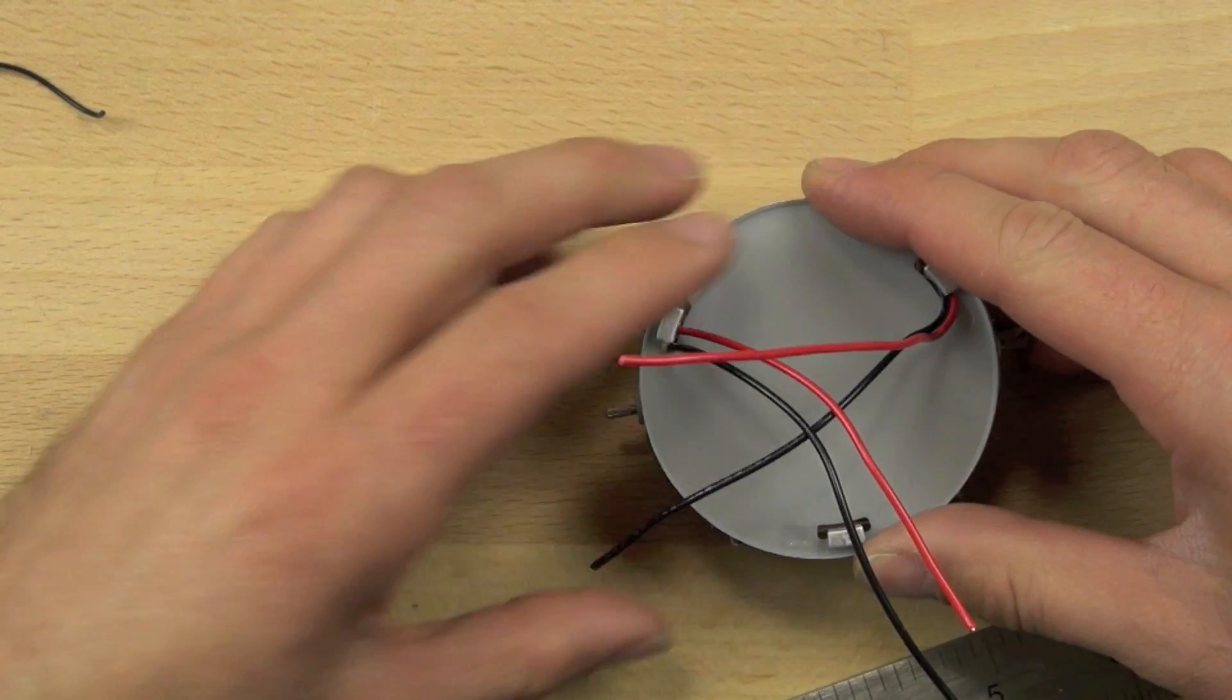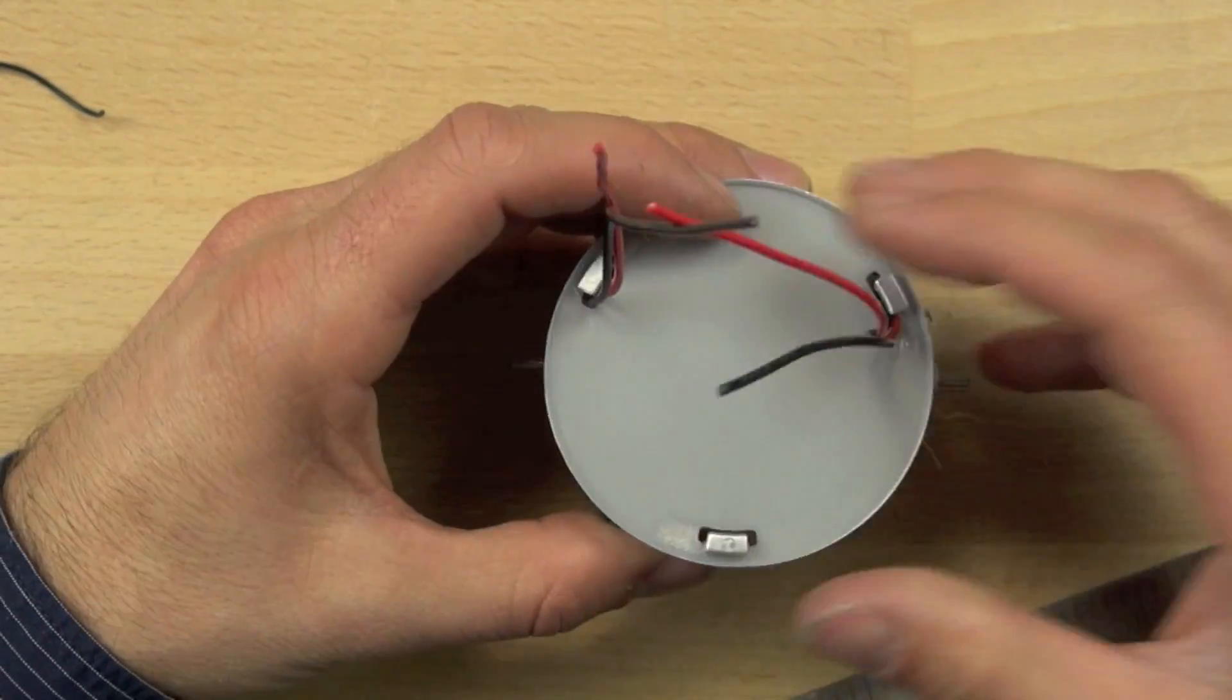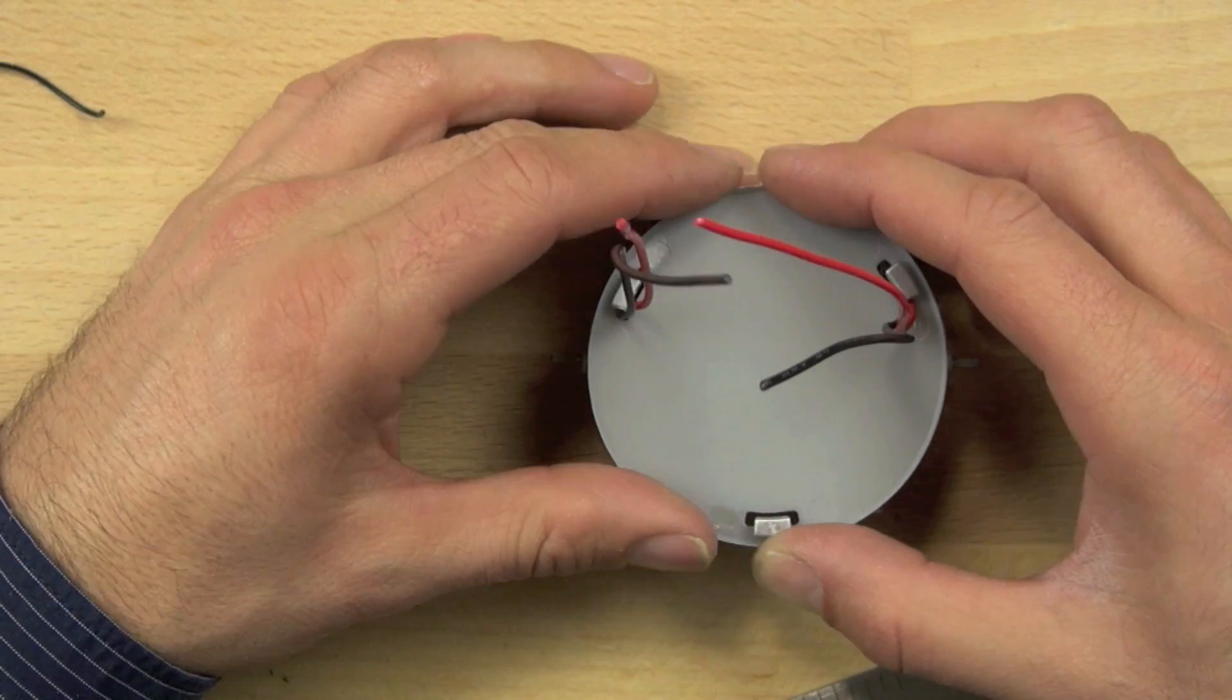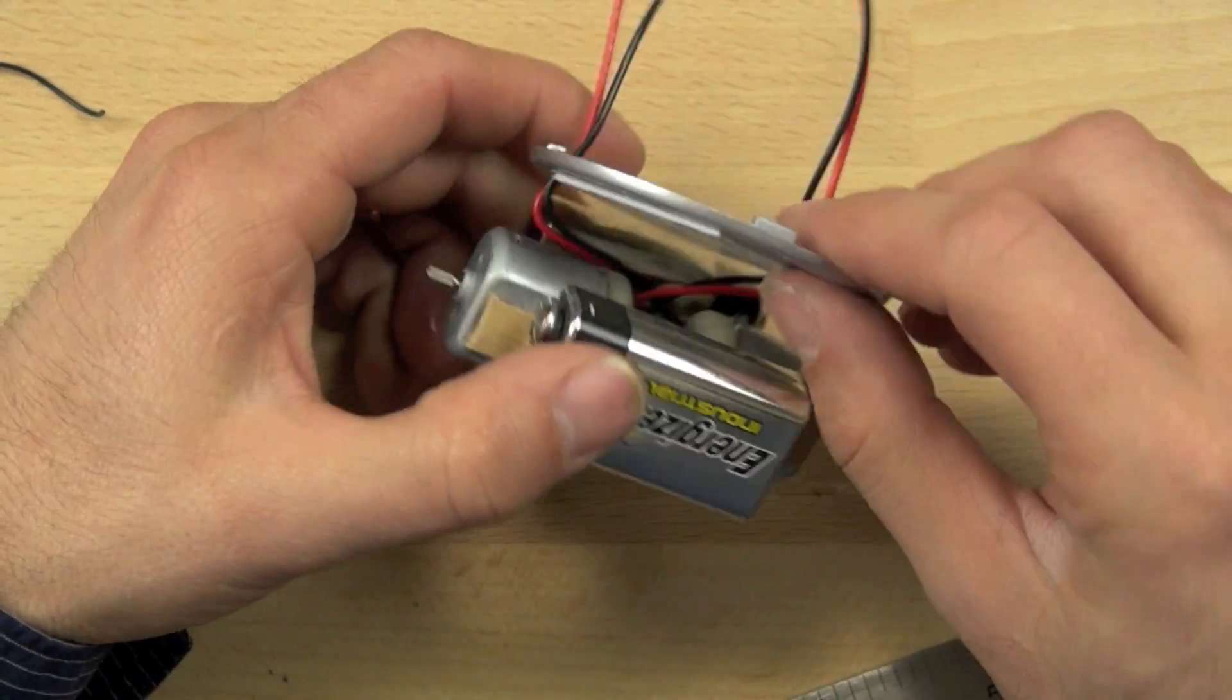Once we've got those lined up, we can bend them out of the way, make sure everything is right in the center and everything is lined up the way we want it to be.